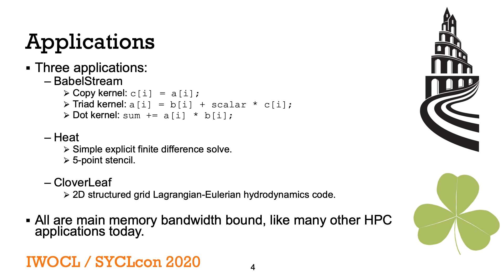BabelStream is an implementation of the McCalpin STREAM benchmark in many different programming models. It follows modern best practices for writing HPC codes today in comparison to the original STREAM. We look at three kernels in this study: copy, triad and dot. The triad kernel is similar to the parallel programming 101 vector addition, but one of the vectors is scaled by a constant. The copy kernel is just like a memcopy, and the dot kernel is a vector dot product and so requires a reduction operation.